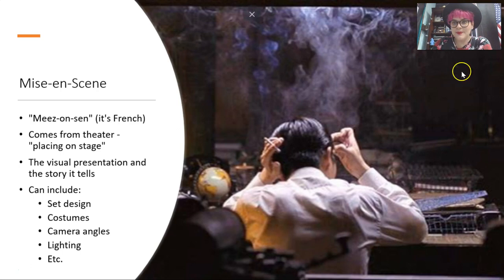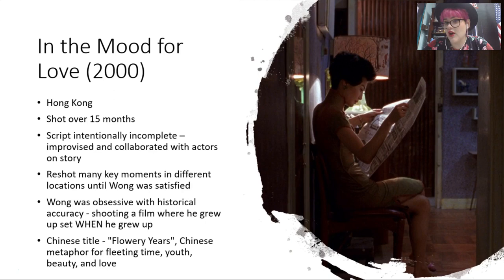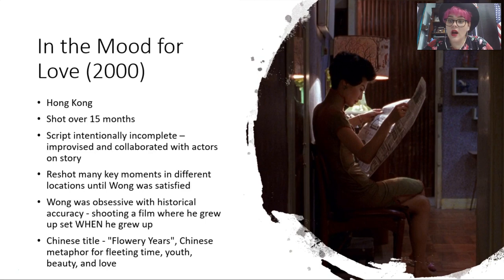In the Mood for Love came out in 2000 and was shot in Hong Kong. It was shot over 15 months, which is a remarkably long time — most films are shot over about three months. It took over a year because it was so improvised. The script was incomplete; Wong Kar Wai worked with the main actors to figure out the story, with important story beats written out. This creates a piece that is very slow and contemplative, focused a lot on the characters rather than a fast-moving plot.